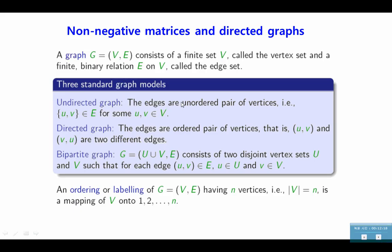Non-negative matrix and directed graph. Undirected graph: the edges are an unordered pair of vertices. For some UV, like this, then we call that graph is undirected. Directed graph: the edges are ordered pair of vertices. UV and VU are two different edges. This edge is from U to V, and this edge is from V to U. It has directions. Then we call it a directed graph. This is the three standard graph models. The last one is the bipartite graph. We have vertices on both sides, and the path is between those two sides. So, G is a union of U and V, and edges, set of edges. These are the set of vertices, and this is the set of edges. Consists of two disjoint vertex sets, U and V, such that for each edge, V in E, U is in U, capital U, and little V is in capital V.